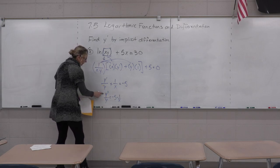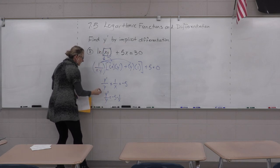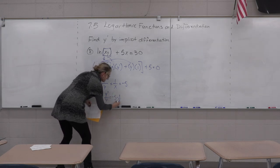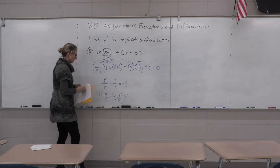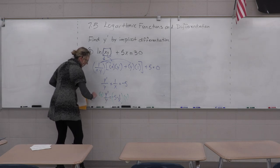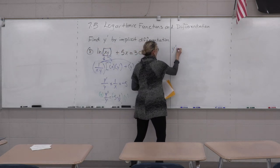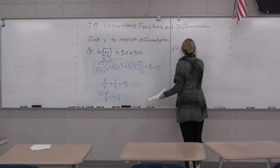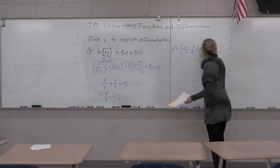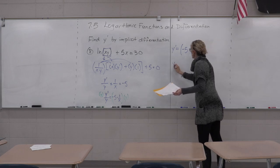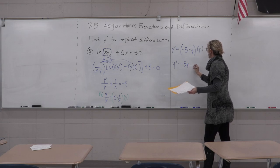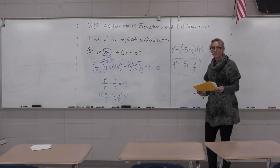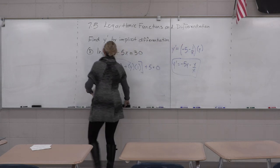To isolate y prime, multiply both sides by y. So y prime equals negative five minus one over x, all times y. Distributing gives y prime equals negative five y minus y over x. Either form is fine — y prime is isolated.